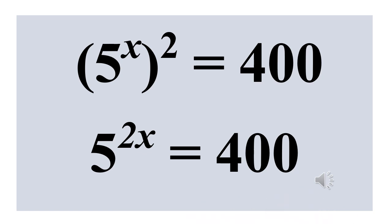From here we can rewrite 5 raised to power x squared by multiplying the exponent x and exponent 2 together, which gives 2x. So we now have 5 raised to power 2x instead of 5 raised to power x squared. Therefore 5 raised to power 2x equals 400, and that is the answer for this particular question.